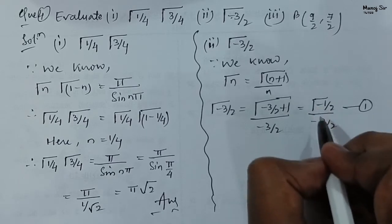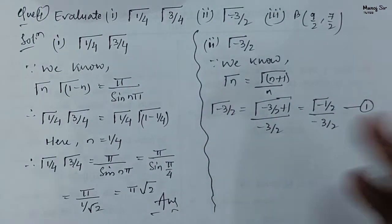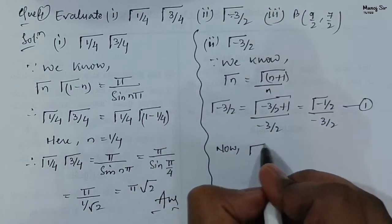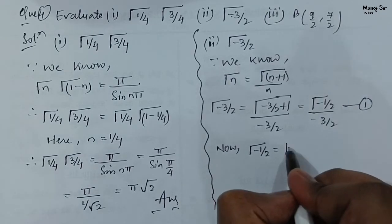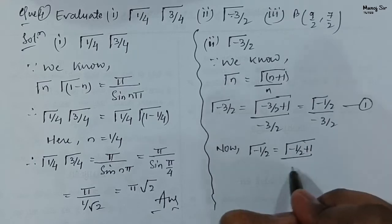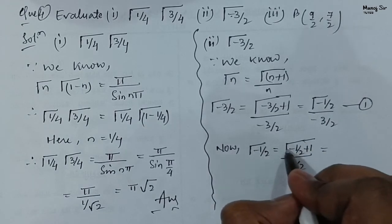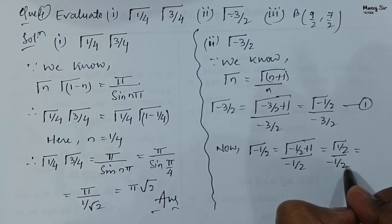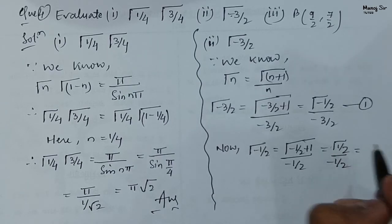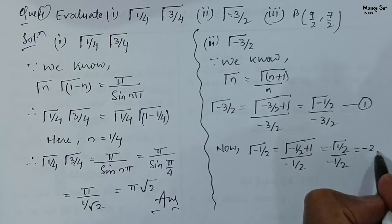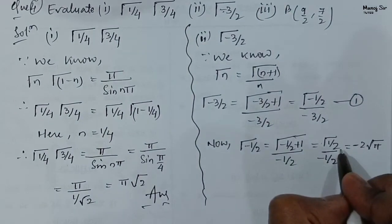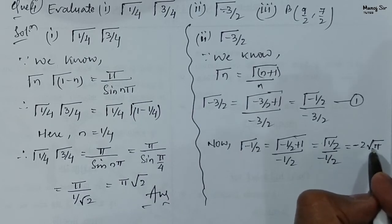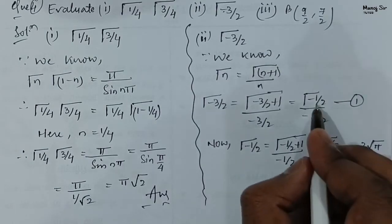We know gamma(1/2) = √π, but we need gamma(−1/2). Applying the recurrence again: gamma(−1/2) = gamma(−1/2 + 1) / (−1/2) = gamma(1/2) / (−1/2). Taking the negative sign and the 2 to the numerator, and substituting gamma(1/2) = √π, we get gamma(−1/2) = −2√π.